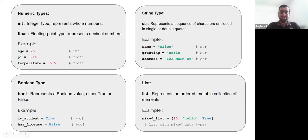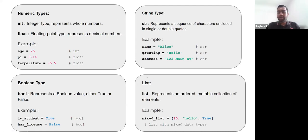Python also offers the boolean data type, which is basically true or false, or one and zero in binary. We also have the list data type, which is basically an ordered mutable collection of elements.